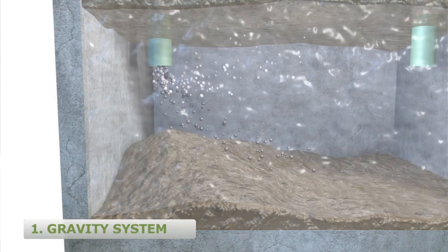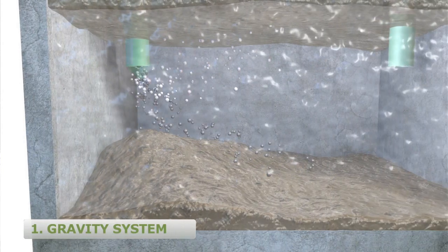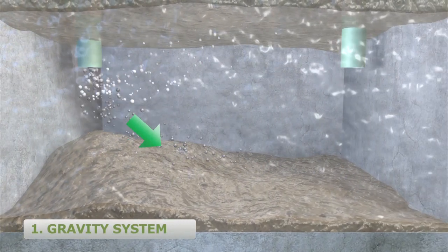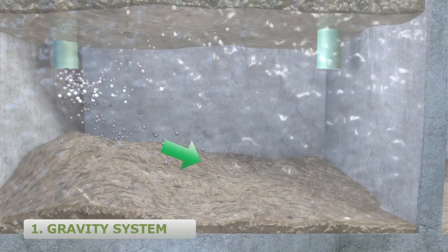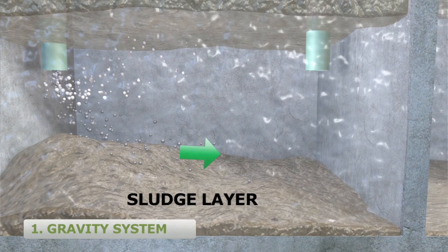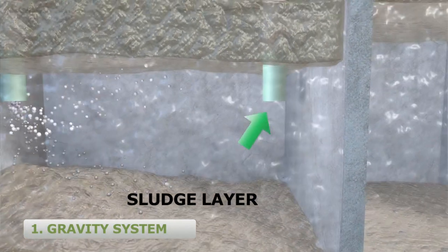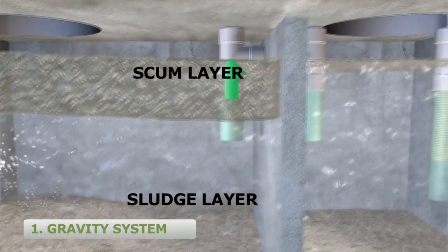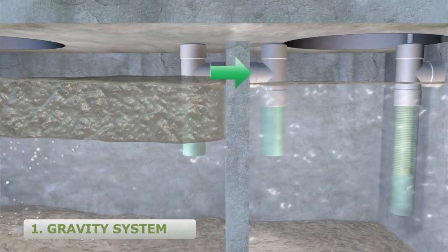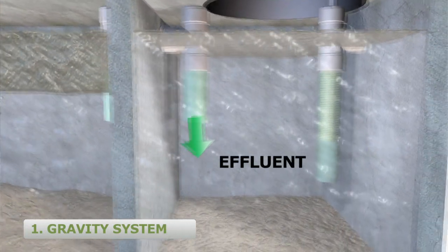In Washington State, the conventional gravity system requires a minimum of three feet of native, undisturbed soil beneath the drain field. As wastewater flows from the house into the septic tank through the inlet baffle, heavy solids settle to the sludge layer on the bottom of the tank. Lighter materials float to the top, forming the scum layer. The clear liquid in the middle is known as effluent.